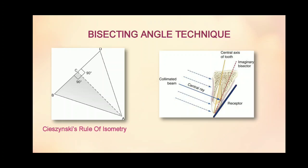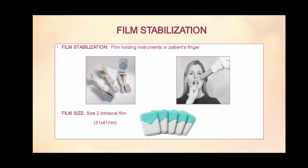The bisecting angle technique is based on a simple geometrical principle called Szynski's rule of isometry, which states that two triangles are equal when they share one common side and have two equal angles. The receptor or film is placed close to the lingual surface of the teeth. The plane of the receptor and long axis of teeth forms an angle, and an imaginary line bisects this angle. The central rays are at right angle to this imaginary bisector, thus forming two triangles with two equal angles and a common side. The film is stabilized either by a film holding instrument or the patient's finger, and a size 2 intraoral film is used in this technique.